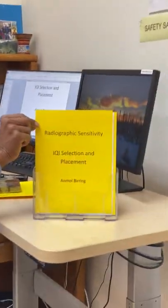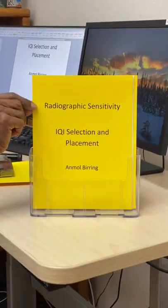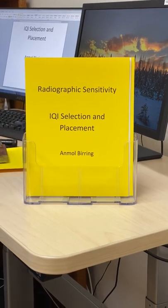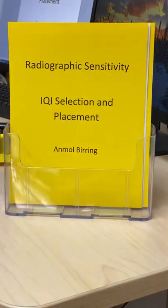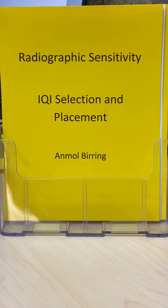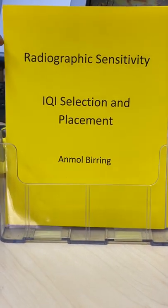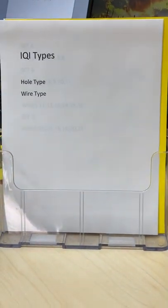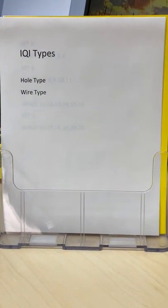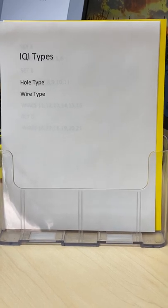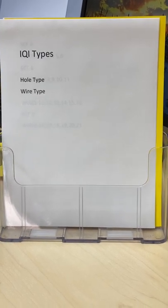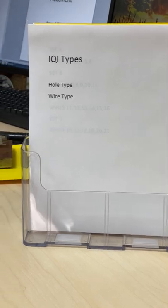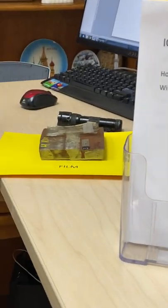The topic of discussion is radiographic sensitivity and IQI — Image Quality Indicator — selection and placement for radiographic testing. There are two kinds of IQIs to verify or validate the sensitivity: one is the wire type and the second one is the hole type.